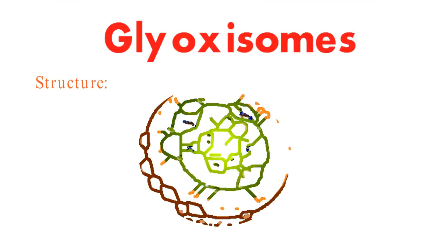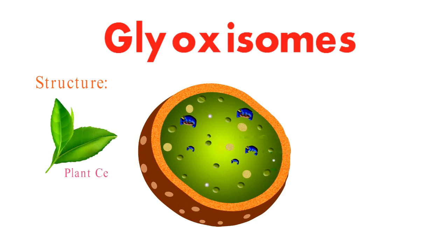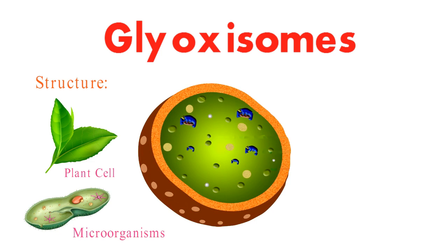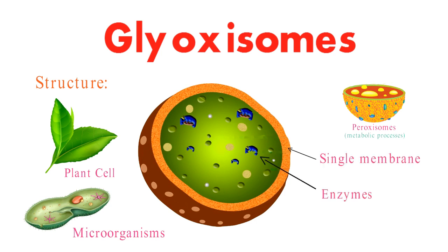Glyoxosomes are specialized organelles found in cells, primarily in plants and microorganisms. They share a similar structure with peroxisomes, which are involved in various metabolic processes. Glyoxosomes are enclosed by a single membrane and contain specific enzymes that participate in distinct metabolic pathways.